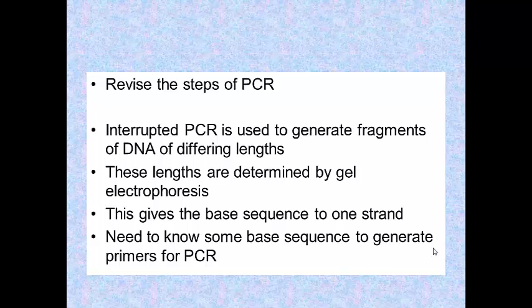In summary, the Sanger technique is interrupted PCR and then we find out where those interruptions have occurred. It's going to give strands of different lengths, we can find out that length by gel electrophoresis. A more detailed exposition of gel electrophoresis will be found on the videos on DNA fingerprinting, I believe in part 2. And that's going to give us our base sequence on one strand. And we need to know some base sequences to generate our primers.